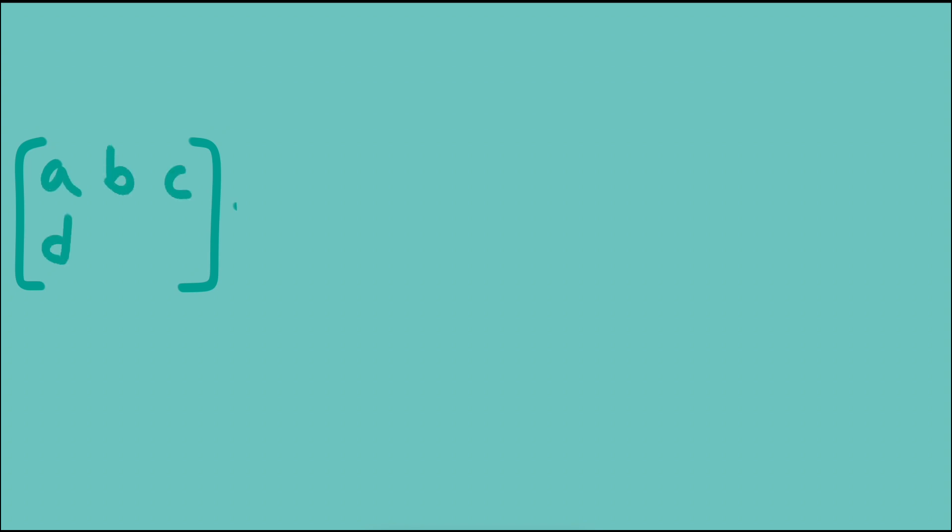The size, or dimensions, of a matrix are labeled by the number of rows and columns it contains. For example, this is a 2 by 3 matrix because it has two rows and three columns.